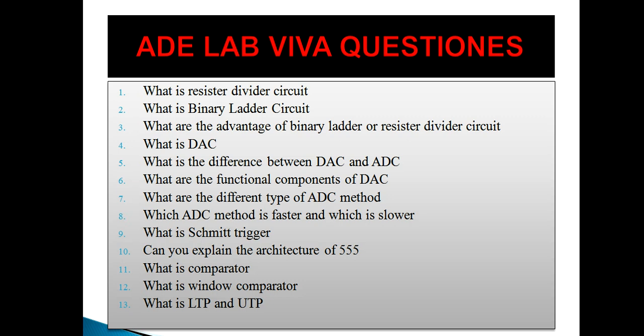What are the different types of ADC methods? The different types are: first, simultaneous conversion or flash type converter; second, the counter method; third, successive approximation; fourth, single slope ramp; and fifth, dual slope ramp. Flash type is the faster method and counter type is the slower method.